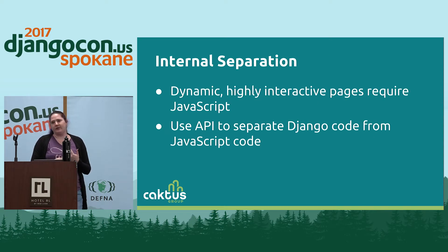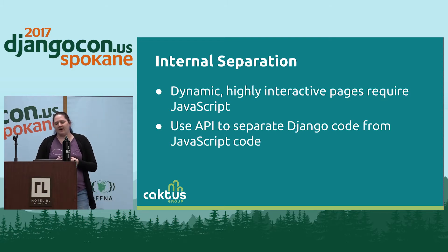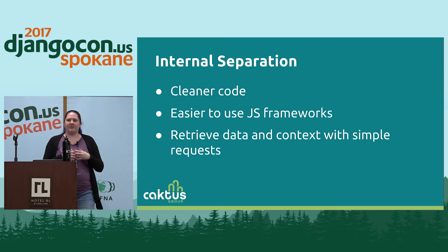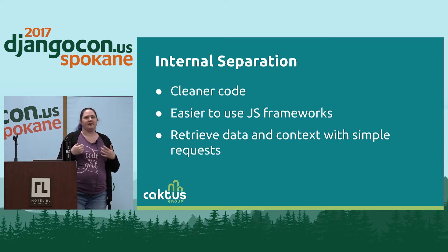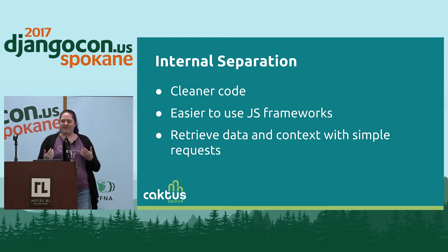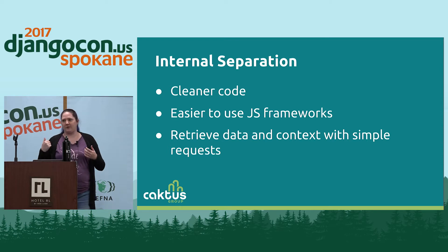You also can use APIs for internal separation of code within your own applications. Modern applications are heavily reliant on JavaScript to be highly interactive and responsive. You can use an API to separate your Django code from your JavaScript code, which results in cleaner code because you don't have it all tangled together in spaghetti code. It also makes it easier to use JavaScript frameworks built around single page apps, and your JavaScript framework can retrieve the data and context it needs with simple API requests — even on the same server, so there's no latency concern.